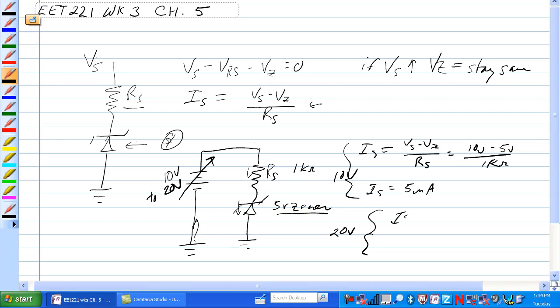We have IS equal to Vs minus Vz over RS, and that's equal to 20 volts. What do you suppose the voltage of the Zener is? Well, you're right, it's 5 volts over 1K Ohm, and that's 15 volts over 1K Ohm, is equal to 15 milliamps.